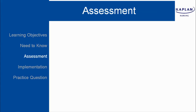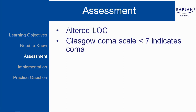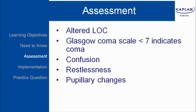Let's continue with the assessment. We're going to look for altered level of consciousness — that's often the earliest sign of increased intracranial pressure. The Glasgow Coma Scale less than 7 indicates coma. Confusion, restlessness, and pupillary changes are all early signs of increased ICP.